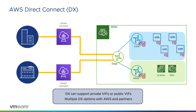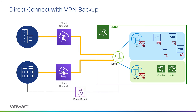While customers typically start off with a VPN for initial connectivity, more and more customers are transitioning to AWS Direct Connect. This provides a high-speed, low-latency connection into your SDDC with a variety of bandwidth options available from AWS and partners. There's also an option to use a route-based VPN as a backup connection in the event that your Direct Connect experiences some sort of failure.